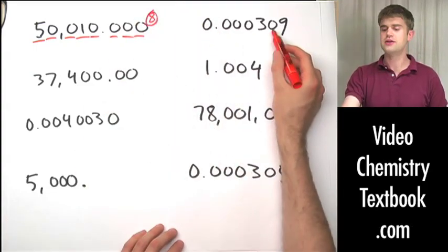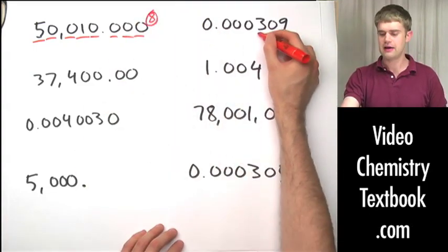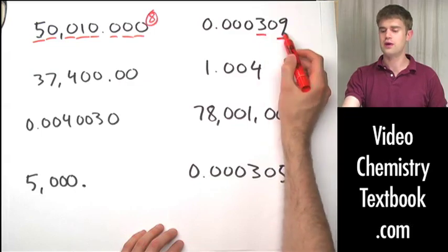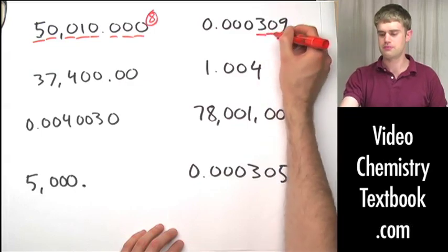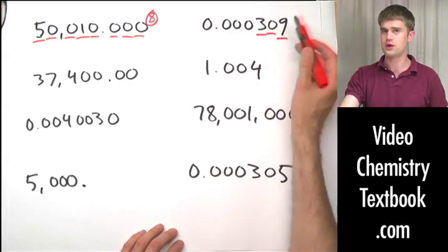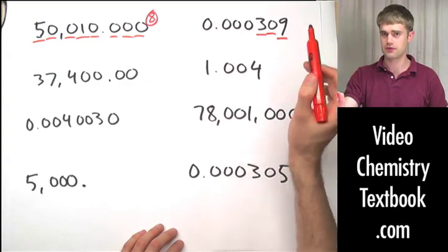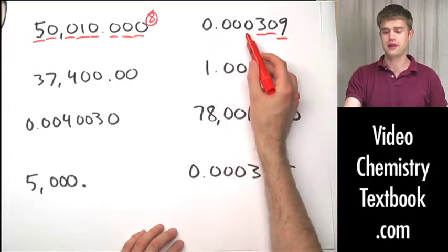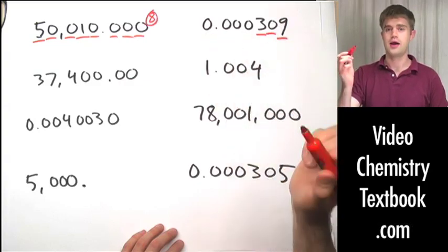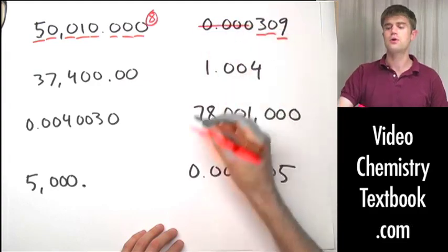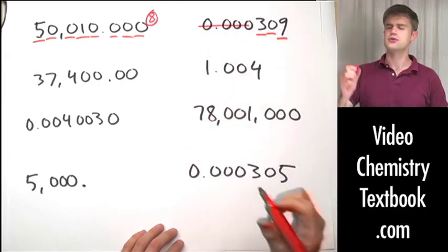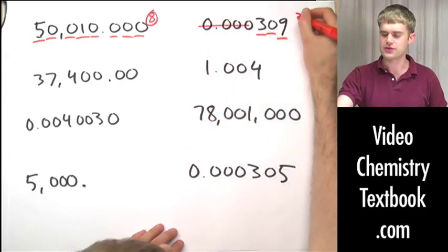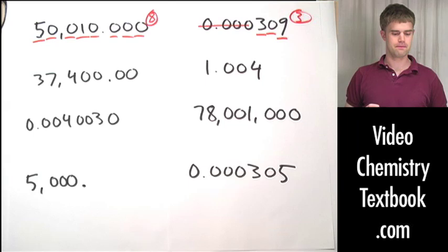Here we have a zero that is sandwiched between non-zero numbers, which means that sandwiched zero is also significant. There are also zeros that come to the left or before the number, and as we've said, those types of zeros are never significant. Only three significant figures here.